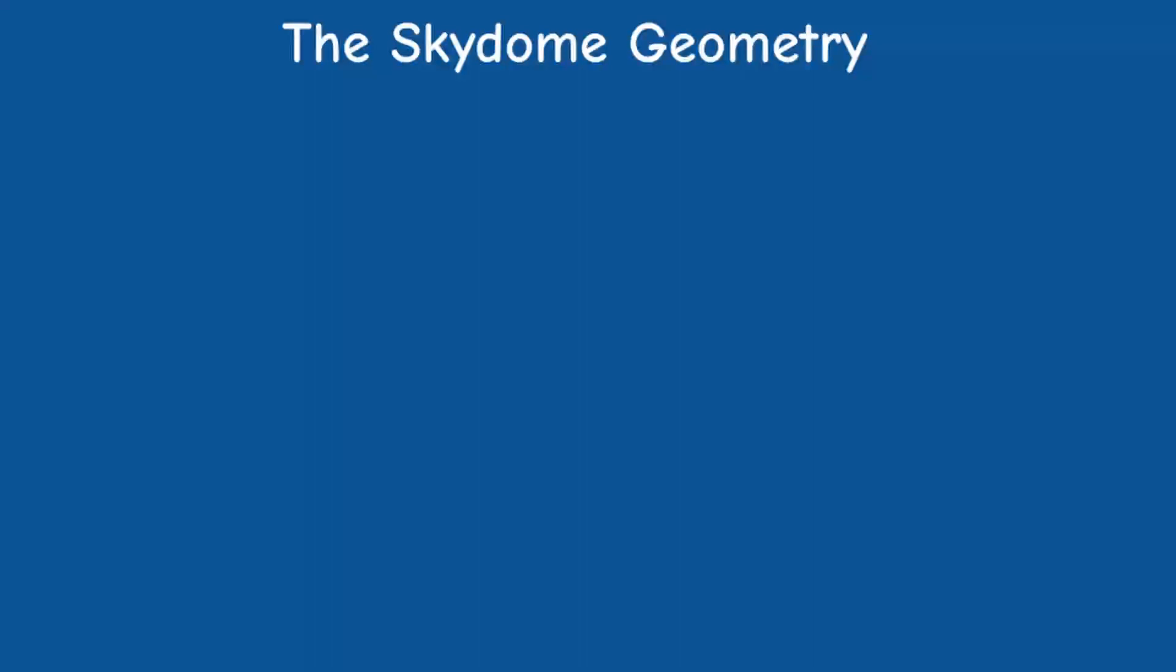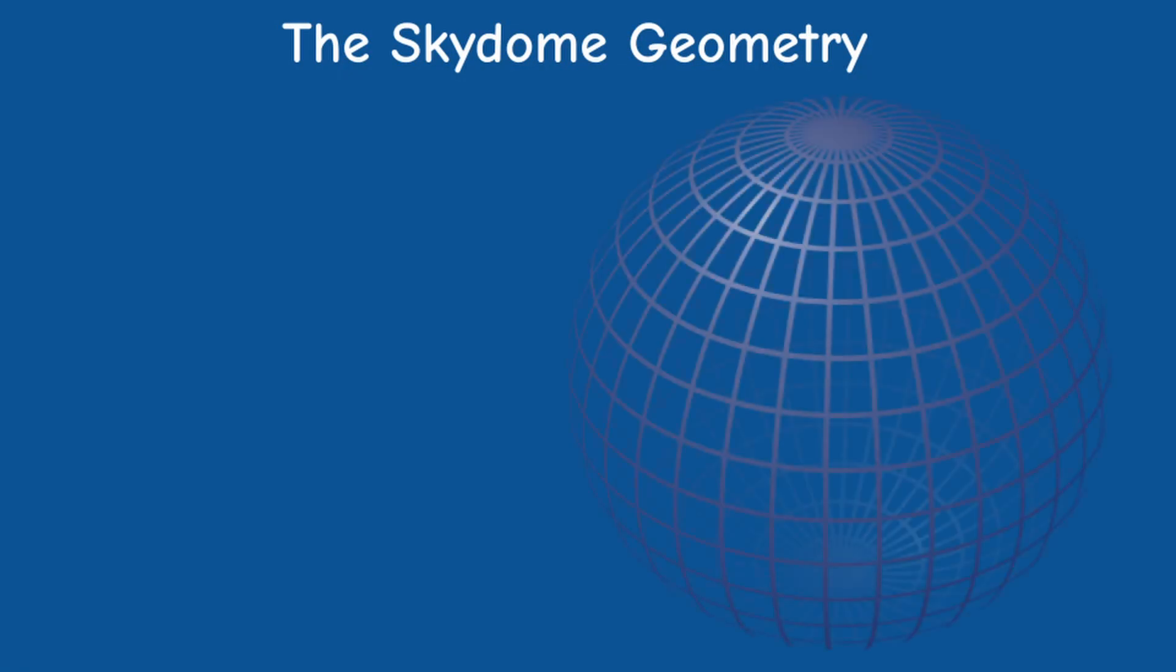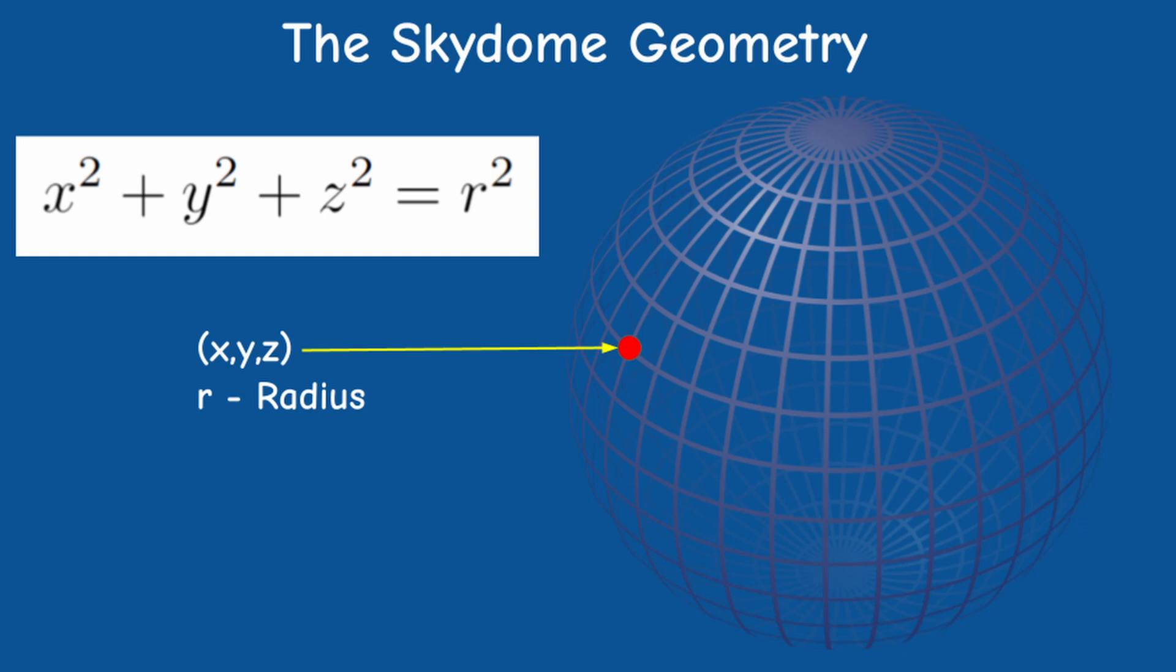Let's take a look at how to create the geometry of the skydome. As I said this is a simple sphere and we know that every point on the sphere satisfies the following equation. This means that summing up the squares of the components of the position vector equals to the square of the radius of the sphere.